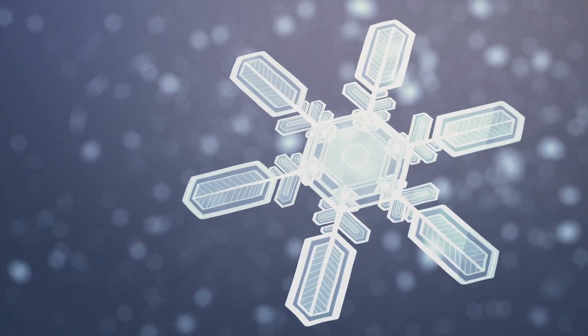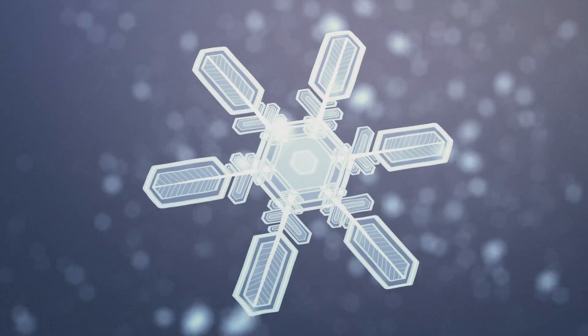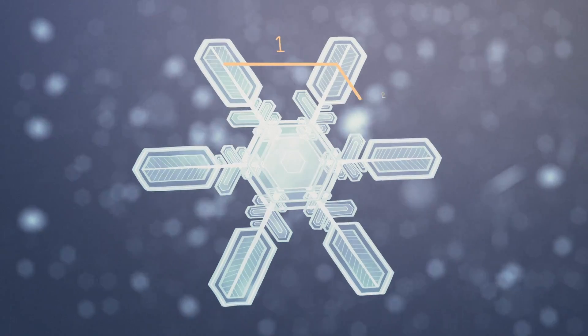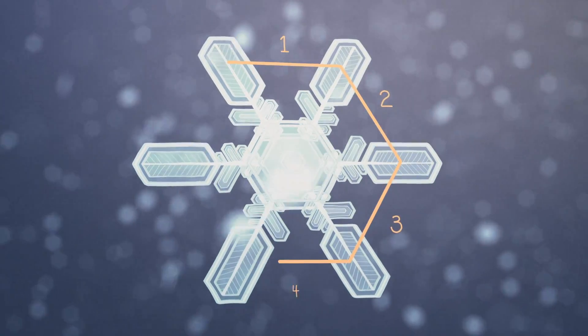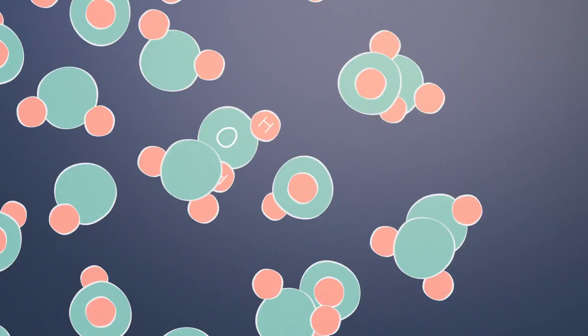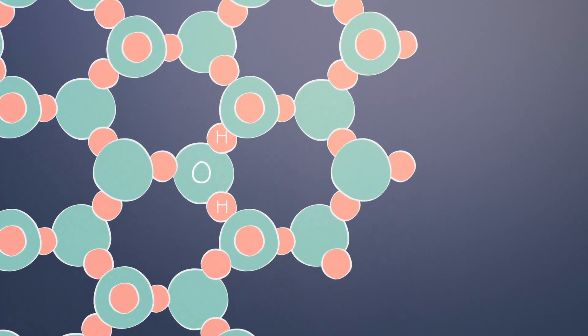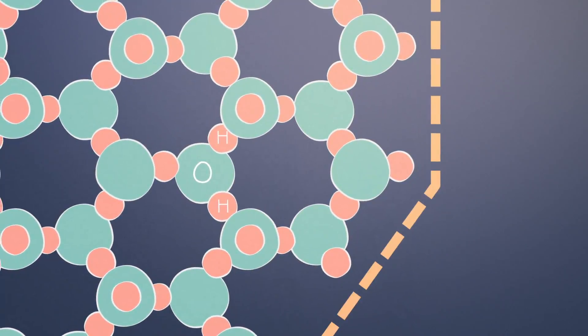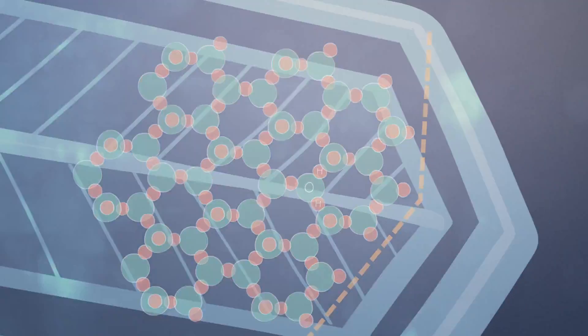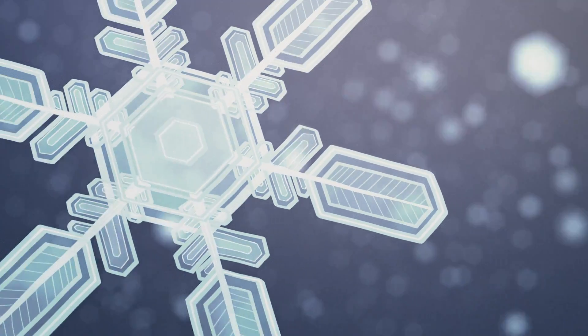One of the things that's really interesting about snowflakes that not many people know is that every single one of them has six sides. That's the way that the bonds, when they freeze, actually force the water to have a fixed shape. Liquid water can move all around — you can pour it and stuff like that — but snow always has six sides.